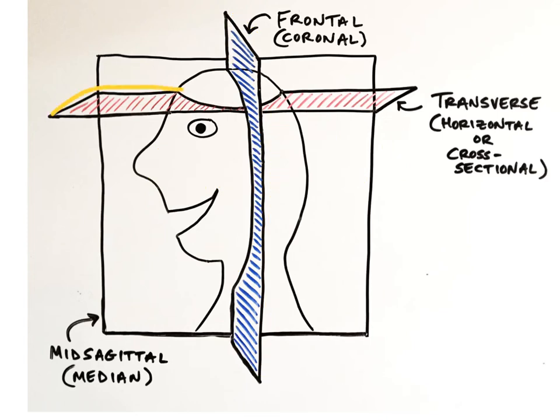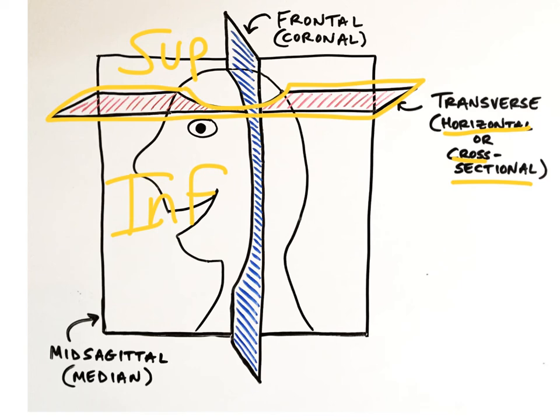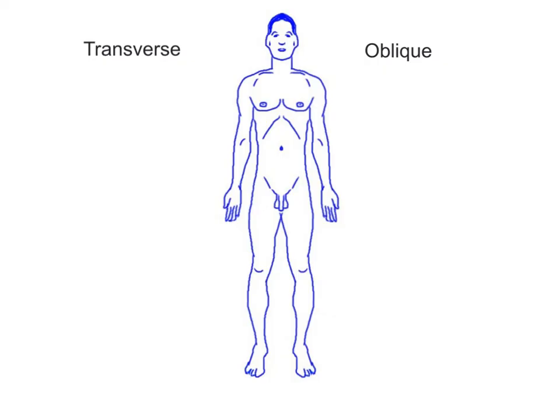A transverse plane divides the body or organ into a superior or upper half and an inferior or lower half. A transverse plane can also be called a horizontal or cross-sectional plane. The word transverse means across, and a transverse plane can divide the body or organ anywhere across its horizontal axis.